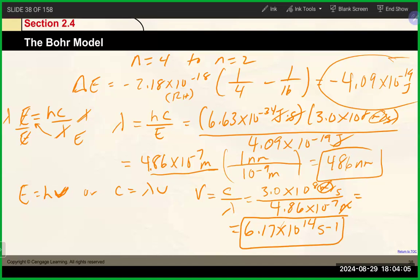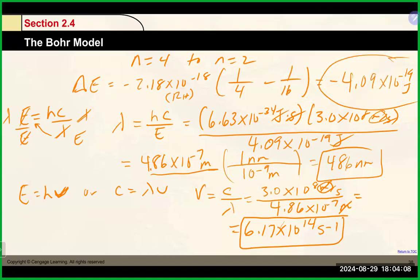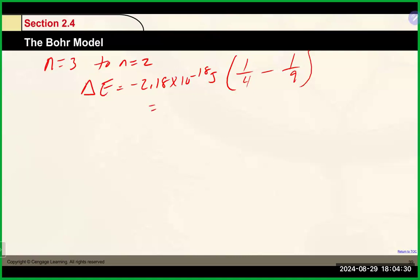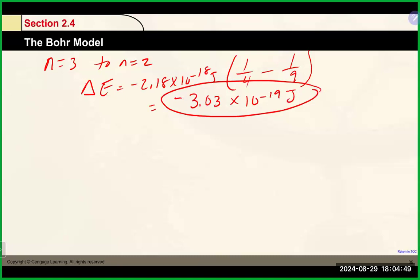Last transition: n = 3 to n = 2. ΔE = −2.18 × 10⁻¹⁸ J × (1/4 − 1/9). We expect a negative value again since we're dropping energy levels, and we get −3.03 × 10⁻¹⁹ joules.